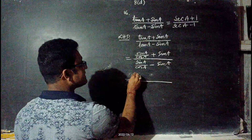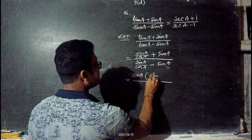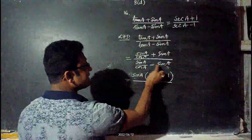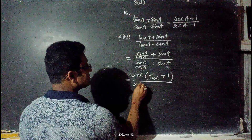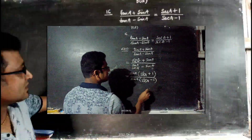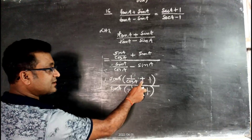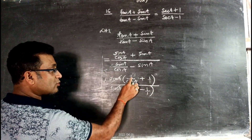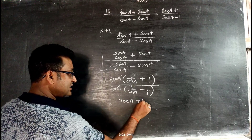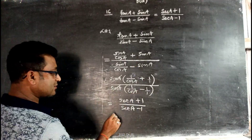Taking sinA common from numerator gives sinA(1/cosA + 1), and from denominator sinA(1/cosA - 1). The sinA terms cancel, leaving (1/cosA + 1)/(1/cosA - 1), which is (secA + 1)/(secA - 1), the required right hand side.